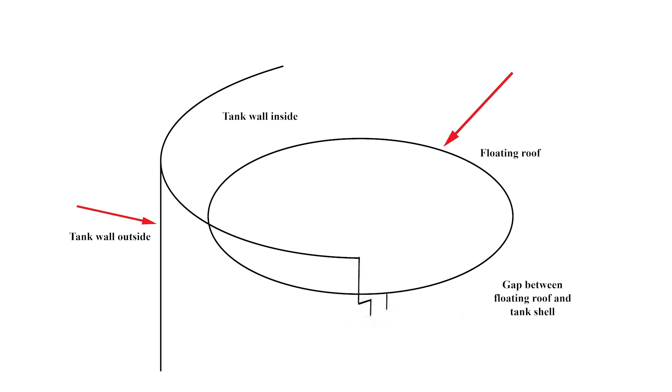Let's say this represents a section of the shell and the floating roof of an external floating roof tank, and this represents a gap where flammable vapor may be present.